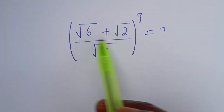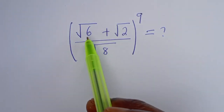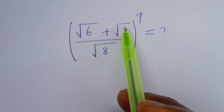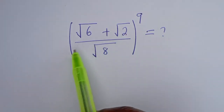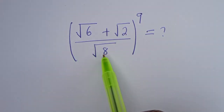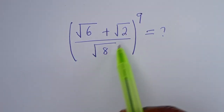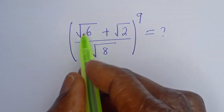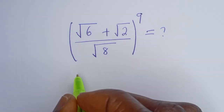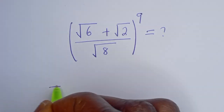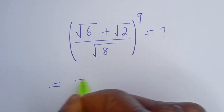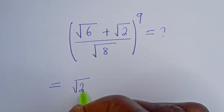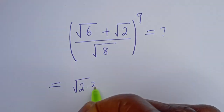Hello. How to simplify this nice math problem: square root of 6 plus square root of 2 divided by square root of 8, all to the power of 9. From here, square root of 6 can be written as square root of 2 multiplied by square root of 3.